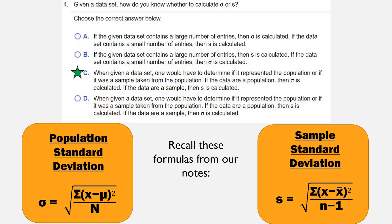If the data are a population, then sigma is calculated. If the data are a sample, then S is calculated. And that's your answer.